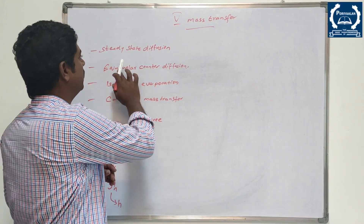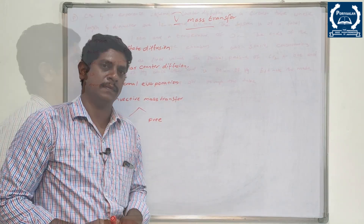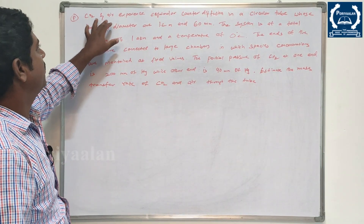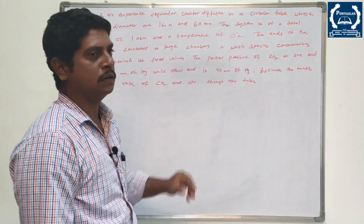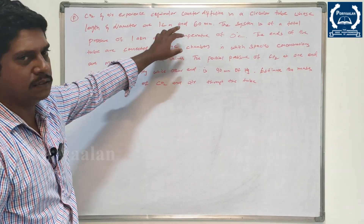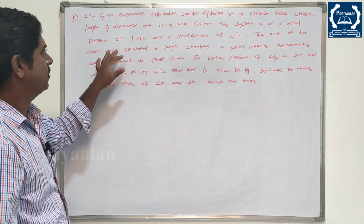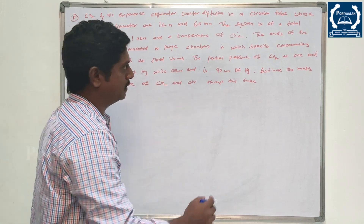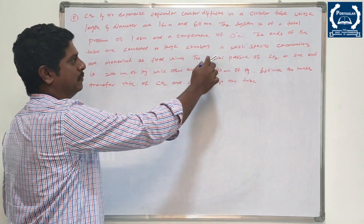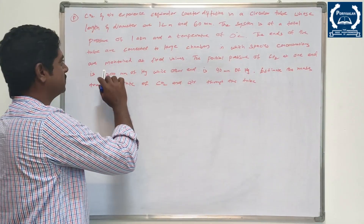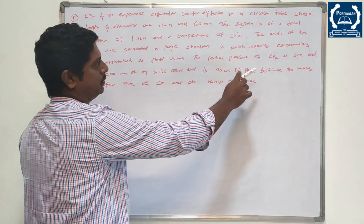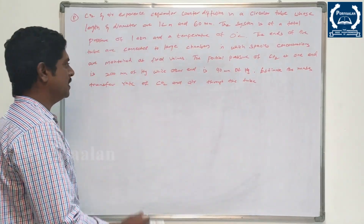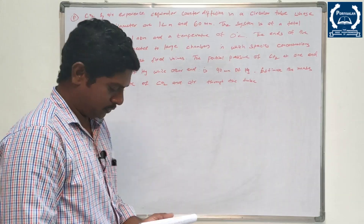There is a problem for equimolar counter-diffusion. Carbon dioxide in air experiences equimolar counter-diffusion in a circular tube whose length and diameter are 1.2 meters and 60 mm. The system is at a total pressure of 1 atm and temperature of 0 degrees Celsius. The ends of the tube are connected to large chambers where species concentrations are maintained at fixed values. The partial pressure of CO2 at one end is 200 mm Hg and at the other end is 90 mm Hg. Estimate the mass transfer rate of CO2 and air through the tube.